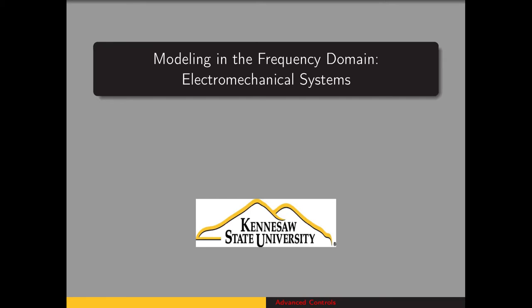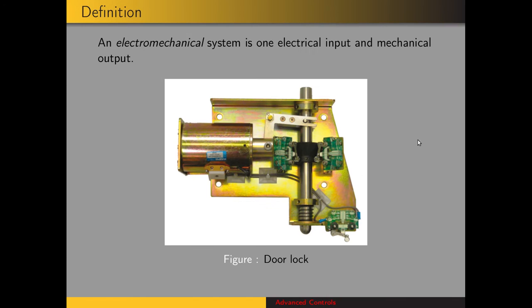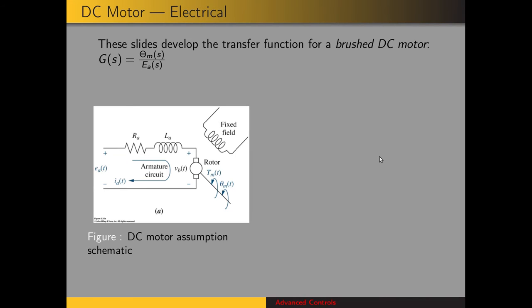We've examined mechanical systems where we have a force input and displacement output. Now we're going to look at an electromechanical system, which is one where we have an electrical input with a mechanical output. Here's an example of an electromechanical door lock. The specific system we'll look at is a brushed DC motor, and we're going to develop the transfer function giving the output position over the input voltage.